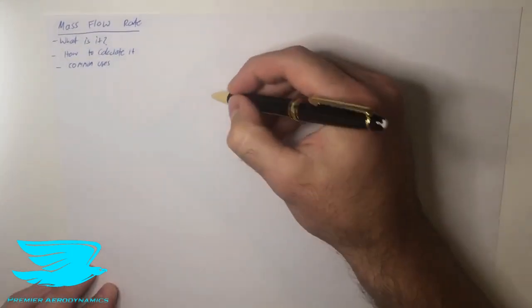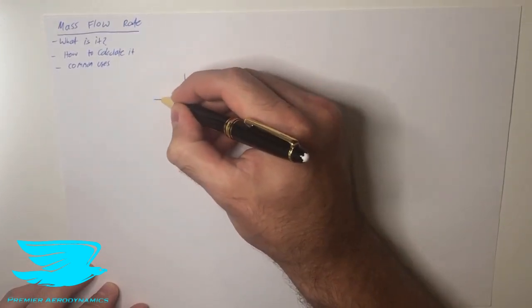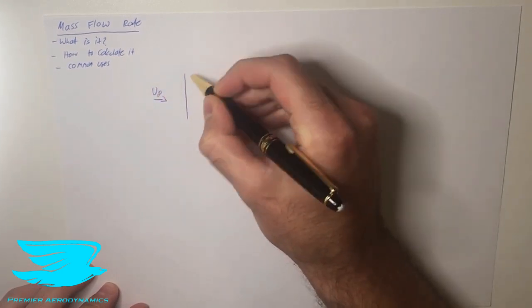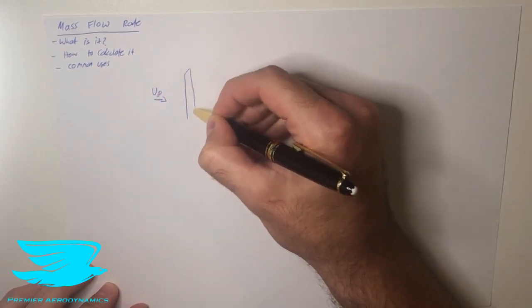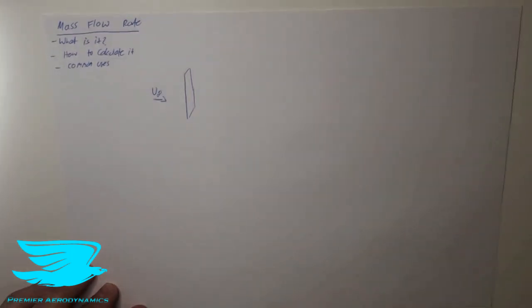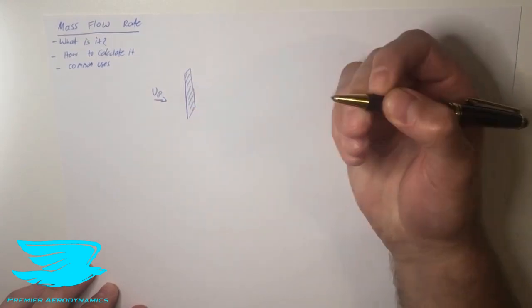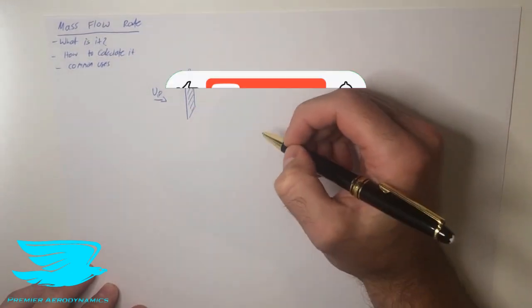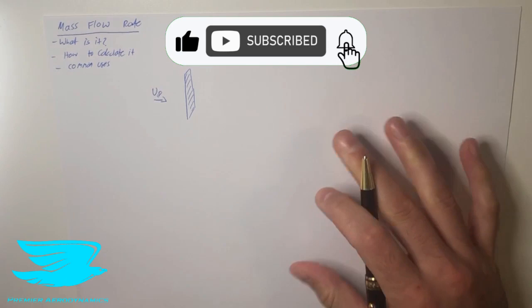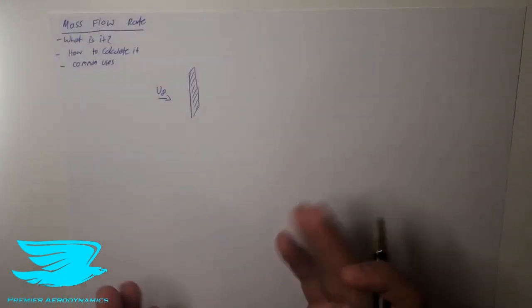So first of all, what is it? Let's say we have a face here and we have the flow going through at a velocity of u infinity, and let's say it's just a regular rectangular face. The mass flow rate determines how much flow is going through this face in any given time. So we usually do it per second, and if we have the flow going through, we know that there is air going through so all we really need to know is the velocity of it.